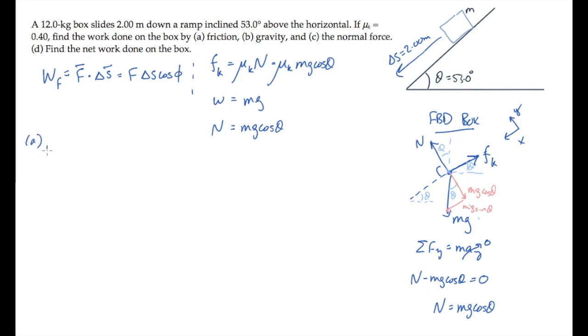Now we can solve part A, finding the work done by the friction force. That's the magnitude of the force times the magnitude of the displacement times the cosine of the angle between those two things. Friction is directed up the ramp, and the displacement is down the ramp, so the angle theta sub f for friction is 180 degrees, and cosine of that is negative 1.